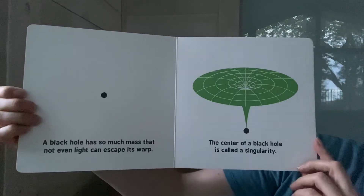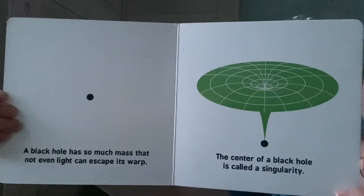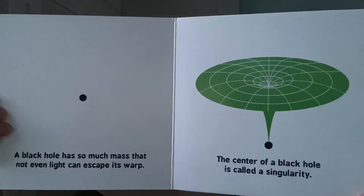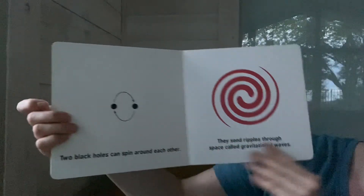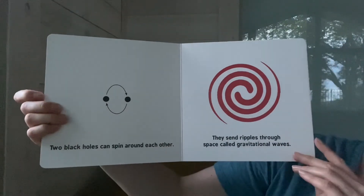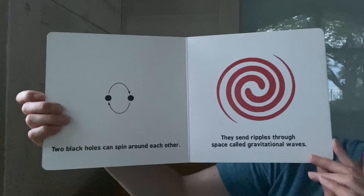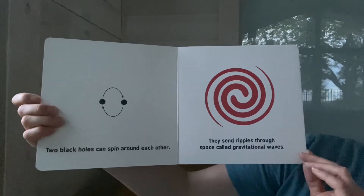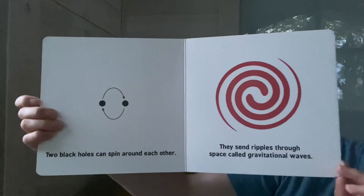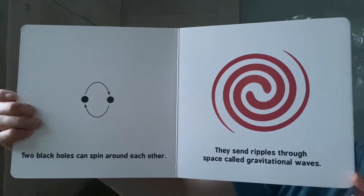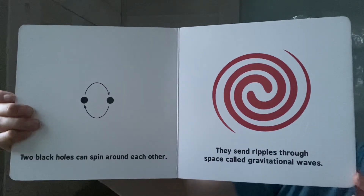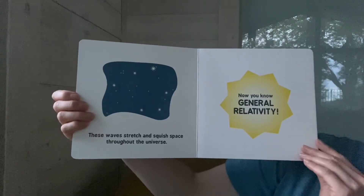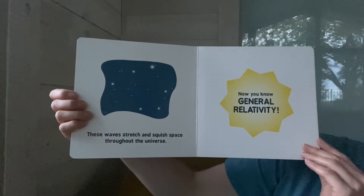The center of a black hole is called a singularity. Two black holes can spin around each other. They send ripples through space called gravitational waves. These waves stretch and squish space throughout the universe.